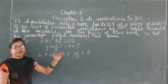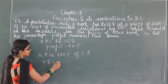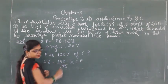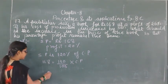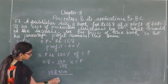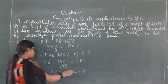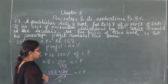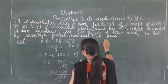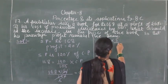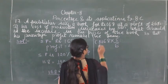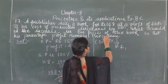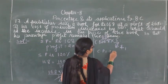The selling price is ₹168, which represents 120% of the cost price. So 168 equals 120 upon 100 into cost price. Rearranging: cost price equals 168 into 100 upon 120, which simplifies to 168 into 5 by 6. Working this out gives cost price equal to 28 into 5.